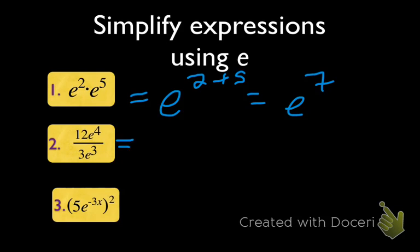Next one. When we divide, we're going to take 12 divided by 3 first. 12 over 3 is 4. Okay? And then e to the 4 divided by e to the 3, that means we're going to subtract the exponents. So we're going to get e to the 4 minus 3, which is just e to the 1. So we can say, hey, that thing is just 4 times e.